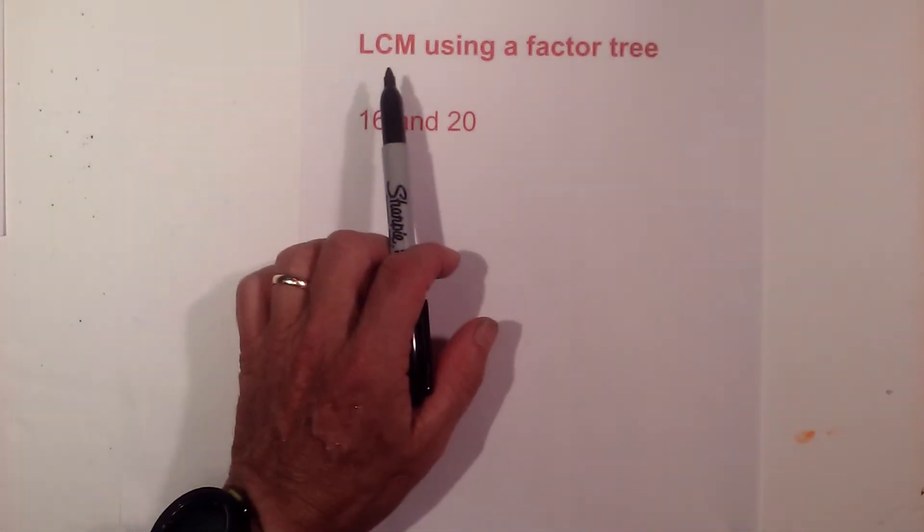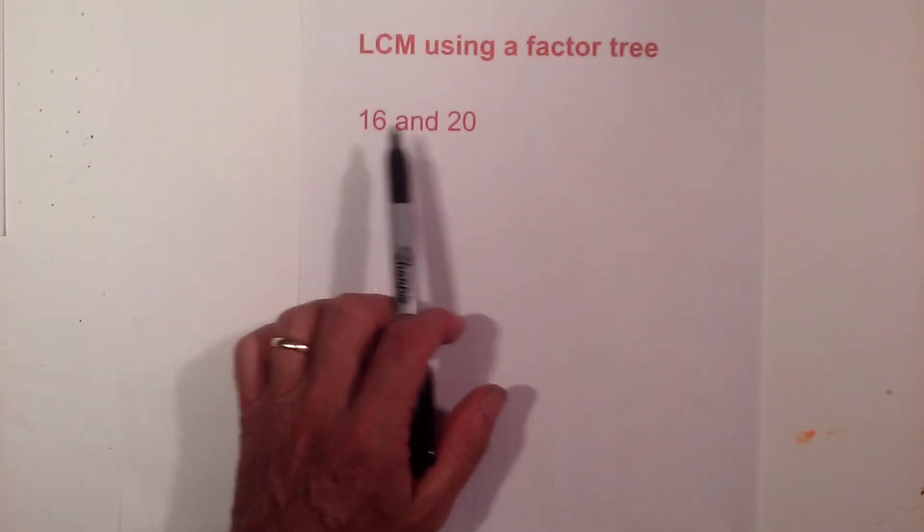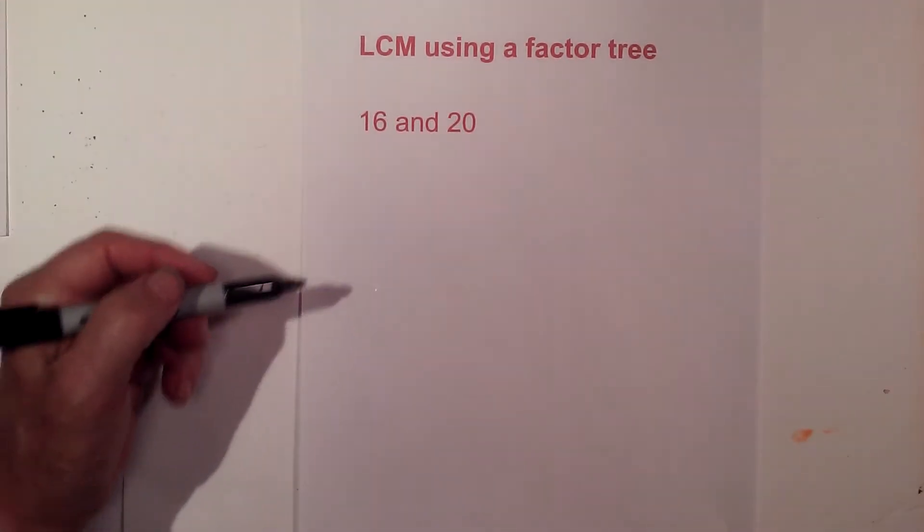In this video, let's find the LCM or the least common multiple of 16 and 20. I like to use a factor tree, so let's get started.